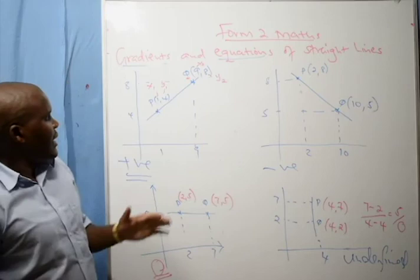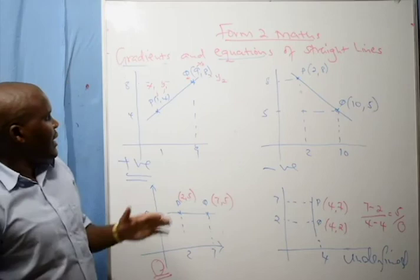So those are the four types of lines: a line where the gradient is positive, a line where the gradient is negative, a line where the gradient is zero, and a line where the gradient is undefined.